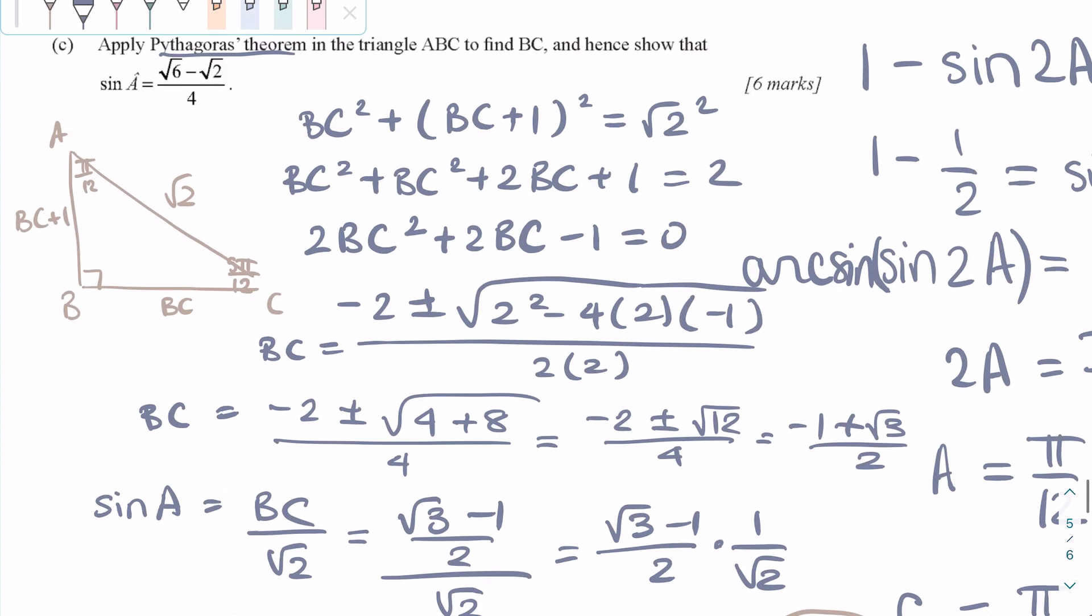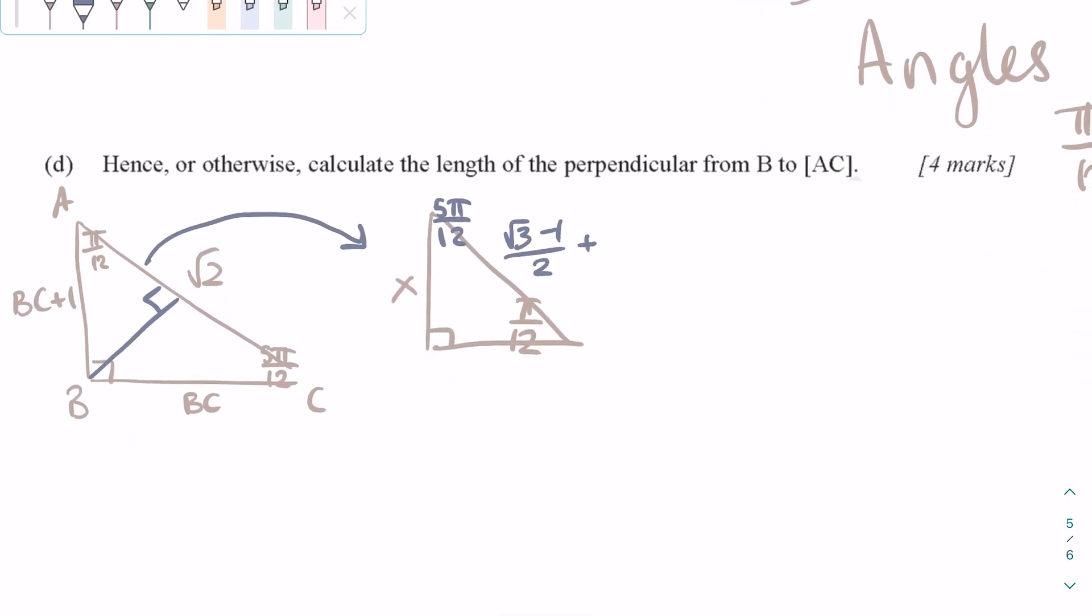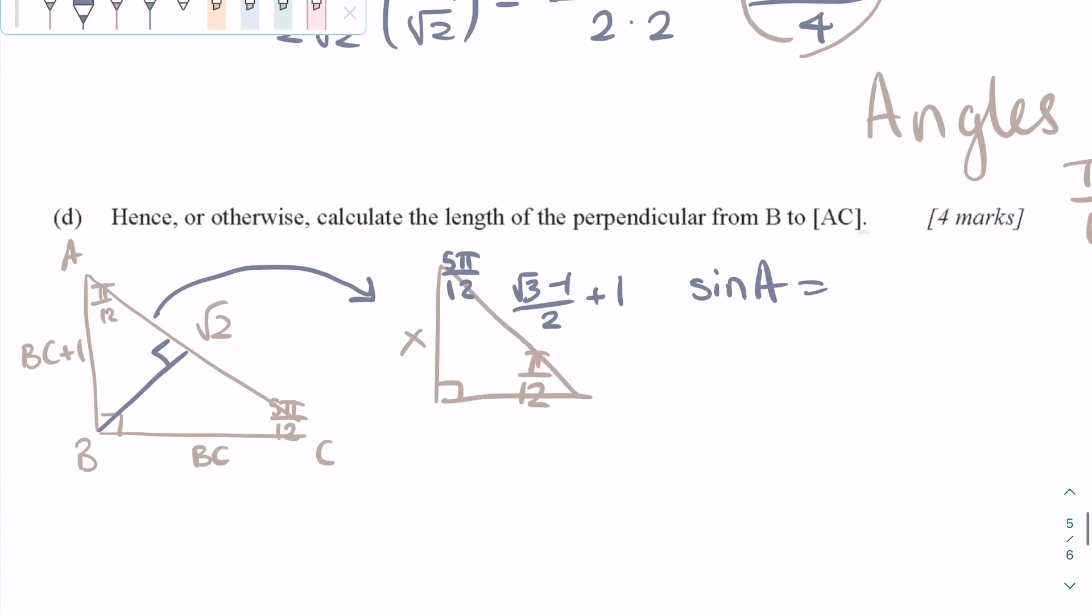That is square root of 3 minus 1 over 2, and all of that plus 1. We can use the definition of sine A that we defined in part C. We can then replace sine A with the definition of sine in the smaller triangle.